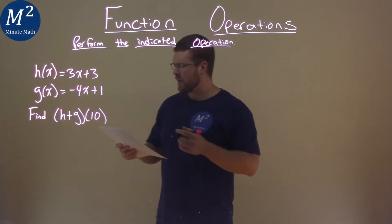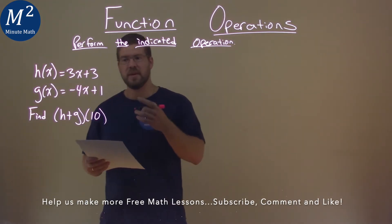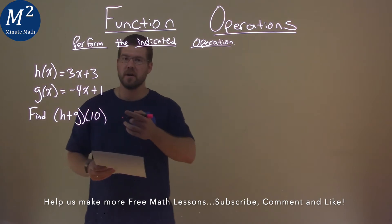We're given this problem right here. h(x) equals 3x plus 3, and g(x) equals negative 4x plus 1. We need to find (h+g)(10).